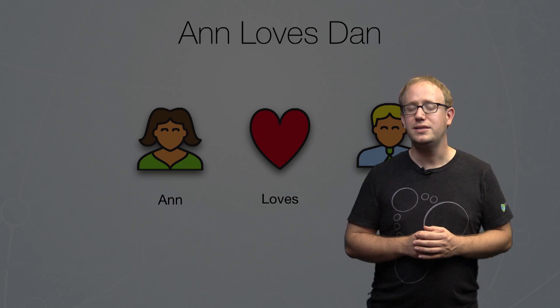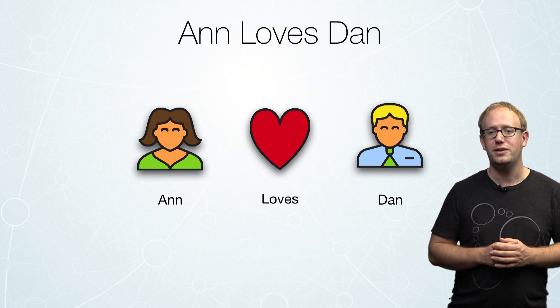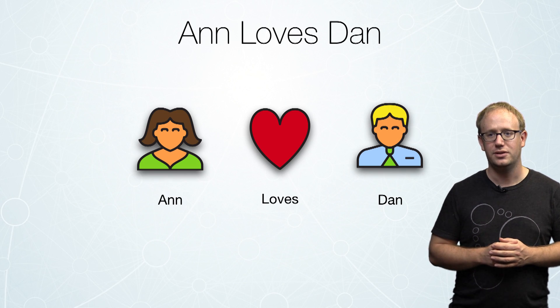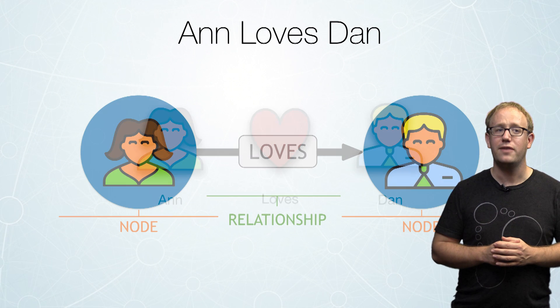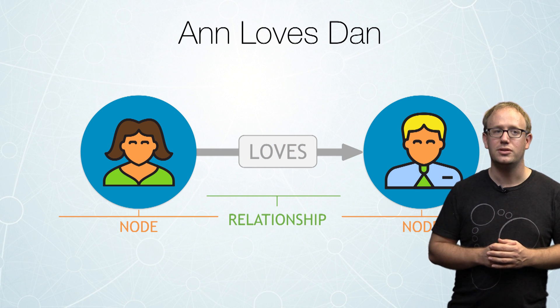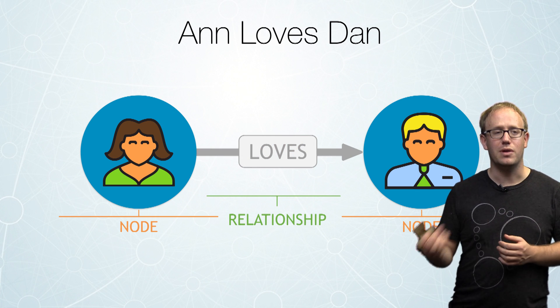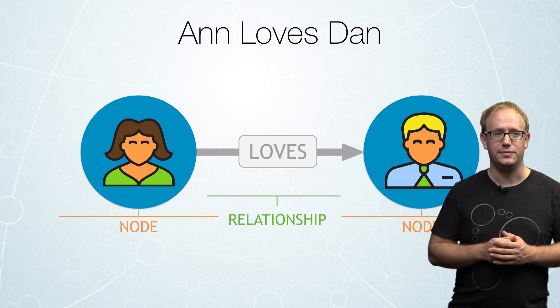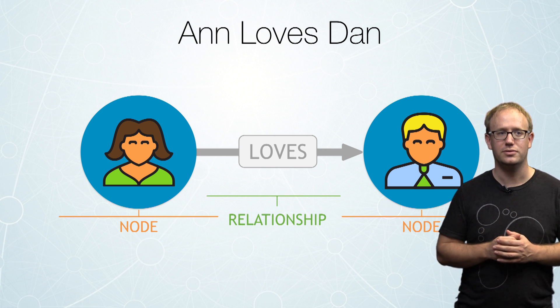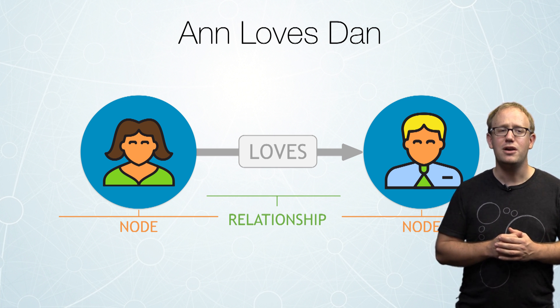So let's start off with a very simple relationship. Let's say that we have Ann loves Dan. In this case, we actually have two nodes — a node representing Ann and a node representing Dan — and we have the loves relationship in between the two.